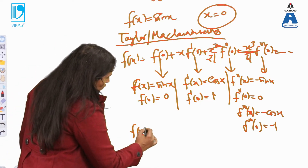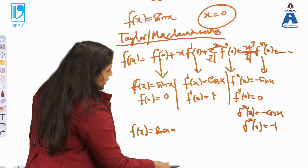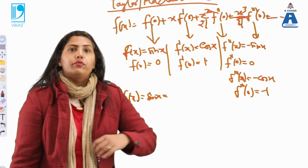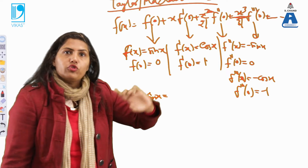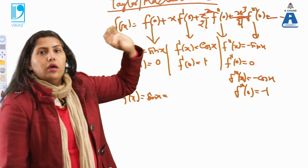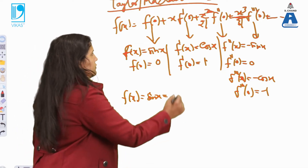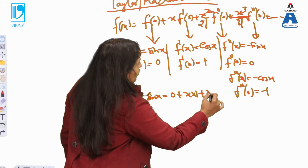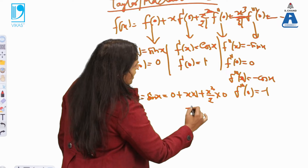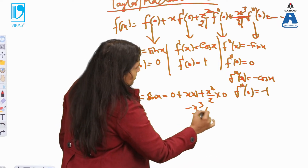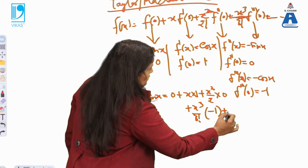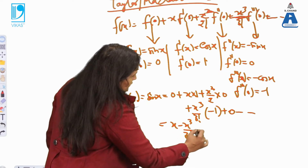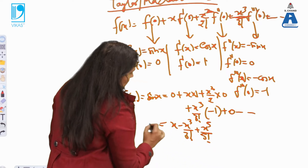Now I'll put these into the formula. One more thing: the function should be infinitely differentiable for any point for which we are discussing the Taylor series. Finally, f(x) = sin x equals f(0) which is 0, plus x times 1, plus x squared by 2 times 0, minus x cubed by 3 factorial times 1, and so on — alternating zero and nonzero terms. This is exactly the sin x series.